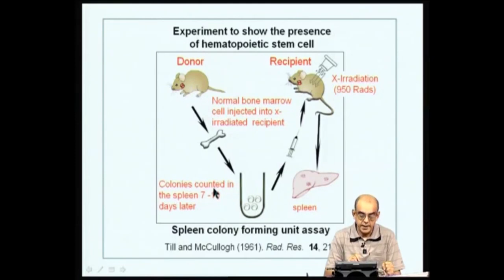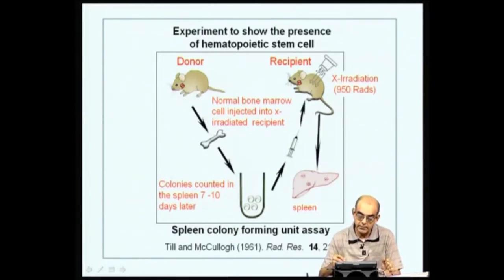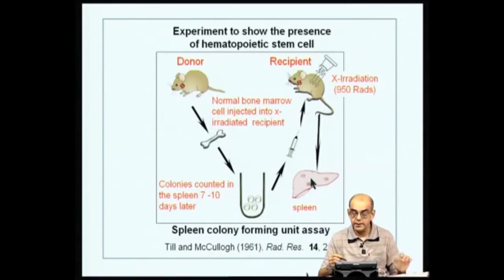After about 7 to 10 days, one would remove the spleen, take it out, and look for colonies that had formed in the spleen. Several colonies would form from these cells that had the ability to immigrate into the spleen. Once these cells immigrated into the spleen, they would start to proliferate and therefore form colonies.